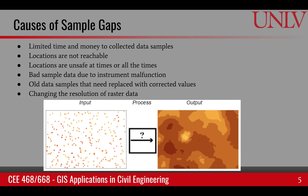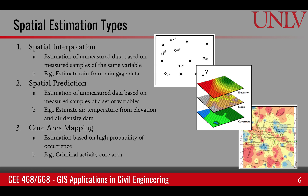There are three basic types of spatial estimation. The first is spatial interpolation. In this case, we have known values at some sample points and we need to find the unmeasured value of the same quantity at a new point. So if this is elevation, we are trying to estimate elevation at a new point; if it's temperature, we're trying to find temperature at the new point — the same quantity.